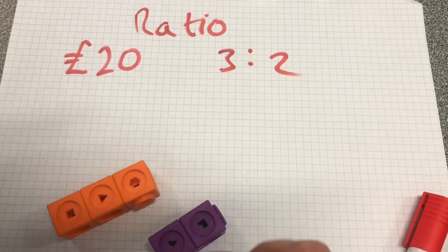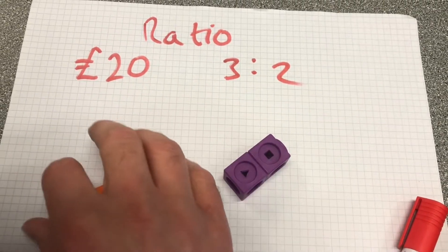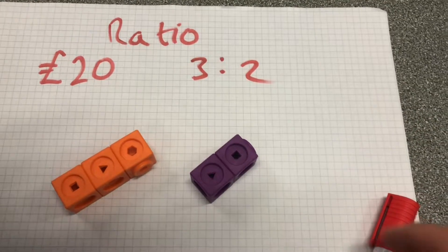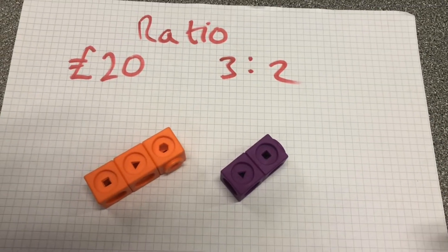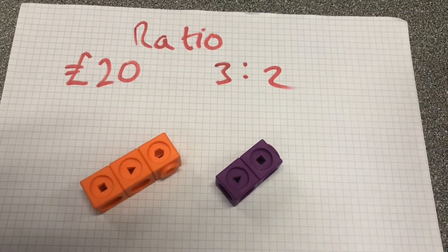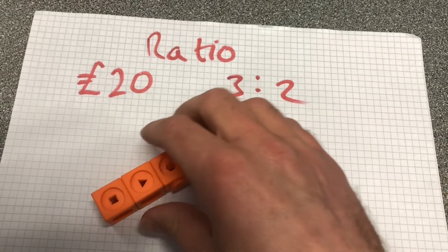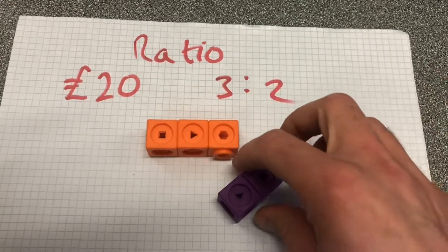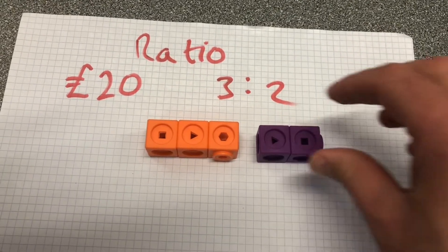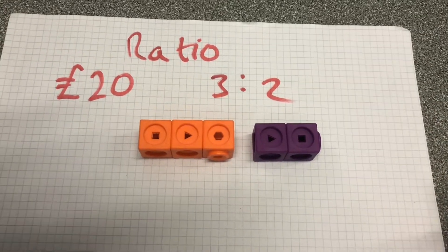Hello and welcome to Martin Maths. We're going to go through ratio and sharing an amount, dividing that amount into the given ratio of 3 to 2. My guest presenter is going to help me. We've got these multilink blocks to be our bar model. Can you talk me through what I need to do?